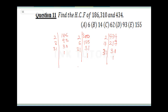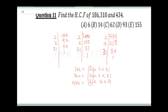So 186 = 2 × 3 × 3 × 31. 310 = 2 × 5 × 31. And 434 = 2 × 7 × 31. Now the HCF — 2 is common, 3 is not common, 5 is not common, but 31 is common. So the HCF is 2 × 31 = 62.